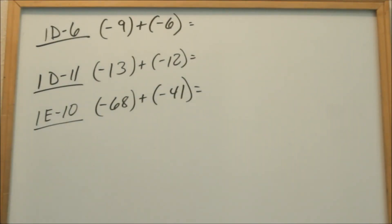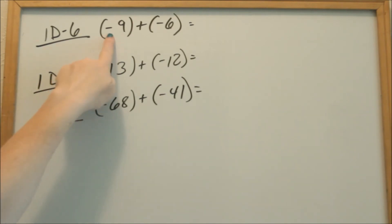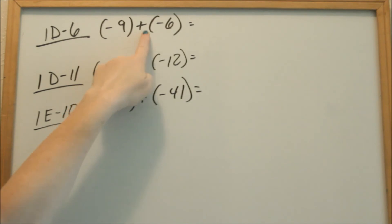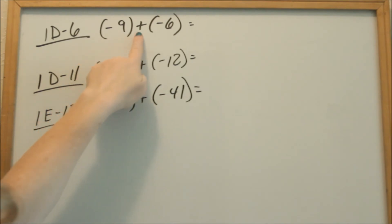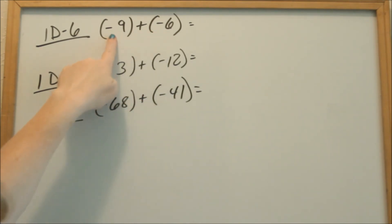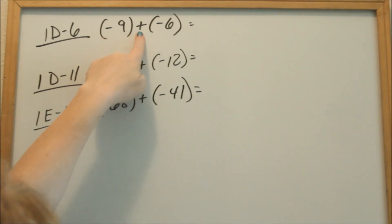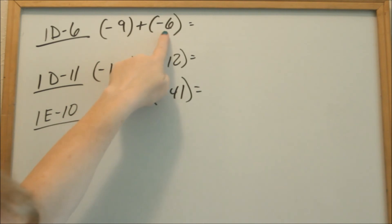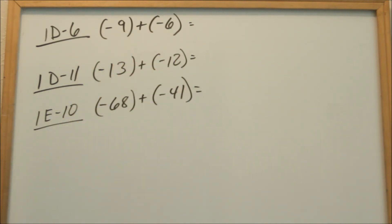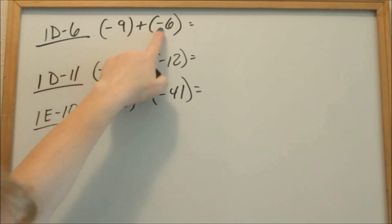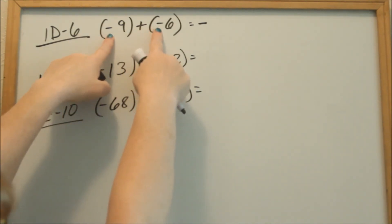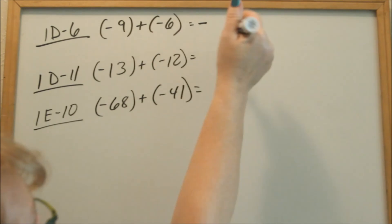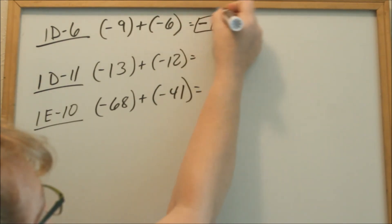Now look at page D number 6. Here it's negative 9, which means I owe, and then I'm adding another negative number, negative 6. So I owe 9 and I owe 6 more. When your signs are the same, you just add the numbers. I owe 9 and I owe 6 — how much do I owe altogether? 9 plus 6 is 15, so I owe 15 altogether.